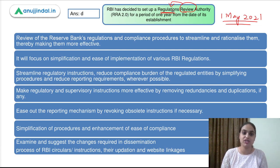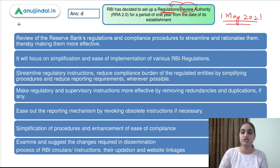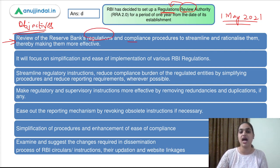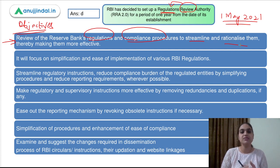A timely review is needed to make sure that whatever gaps exist in the existing regulations, we can improve on that. We can simplify the procedures and make them even more efficient. One of the major reasons is to review the RBI's regulations and the compliance procedures, thereby streamlining and rationalizing them. We need to improve and make these existing regulations more effective, so we first need to review all the regulations and all the compliance procedures which are there in practice. Once we review all the regulations and see how they are functioning, only then will we be able to streamline them in a proper direction.